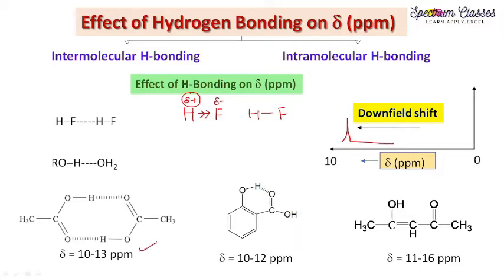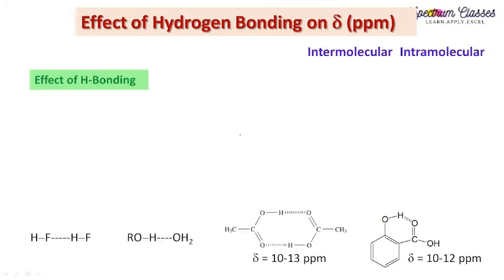I have summarized a few delta shift values for inter and intramolecular hydrogen bonding. In acetic acid, the delta value is 10 to 13 ppm. In salicylic acid, it is 10 to 12 ppm. In the keto-enol form, it is observed at 11 to 16 ppm. This is how hydrogen bonding has its effect — due to hydrogen bonding, the electron density around the hydrogen atom decreases.